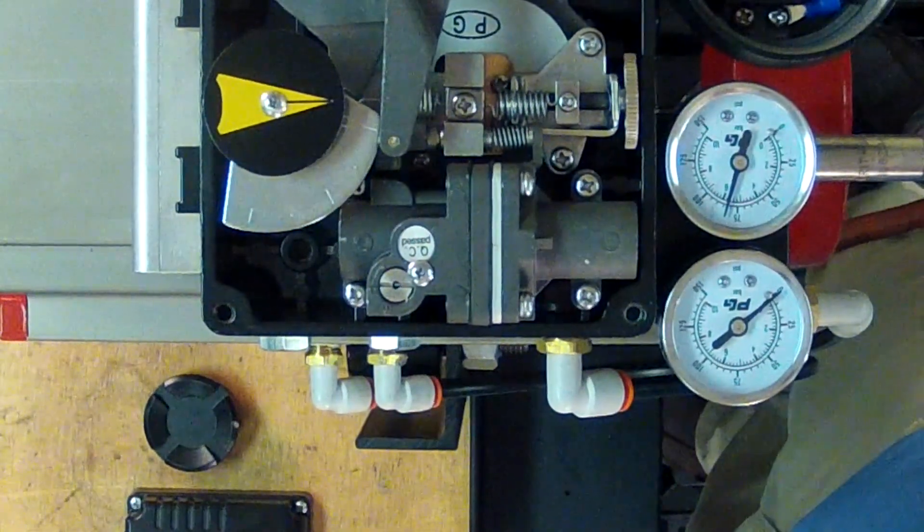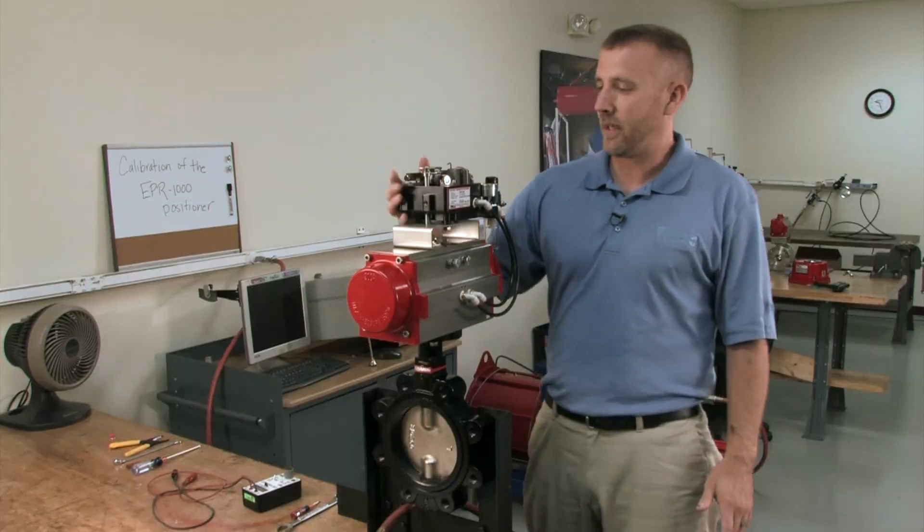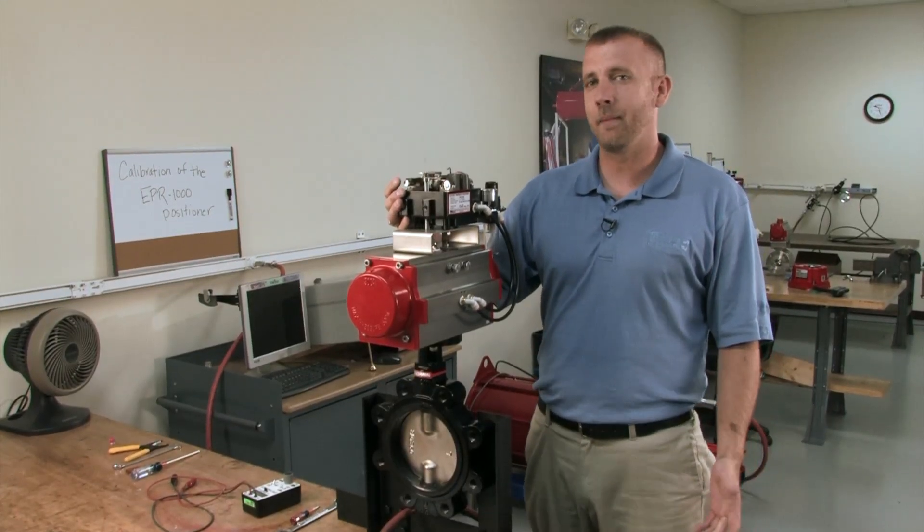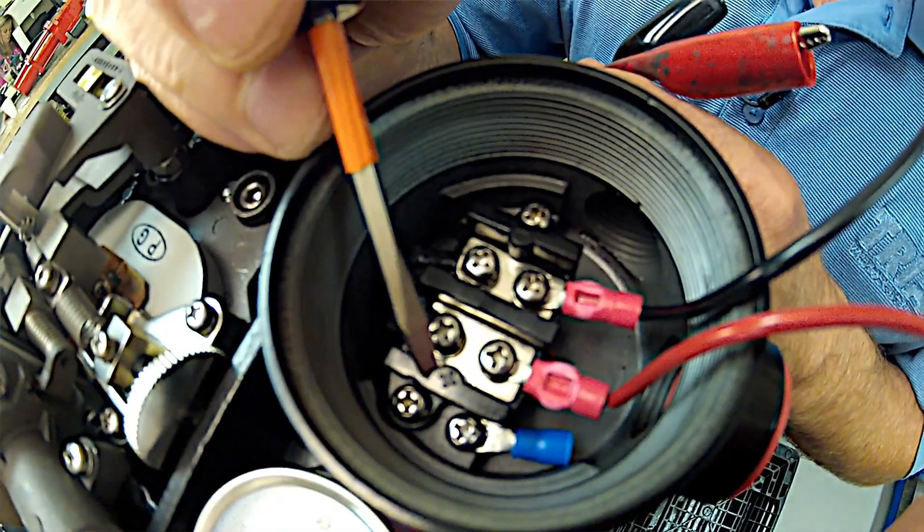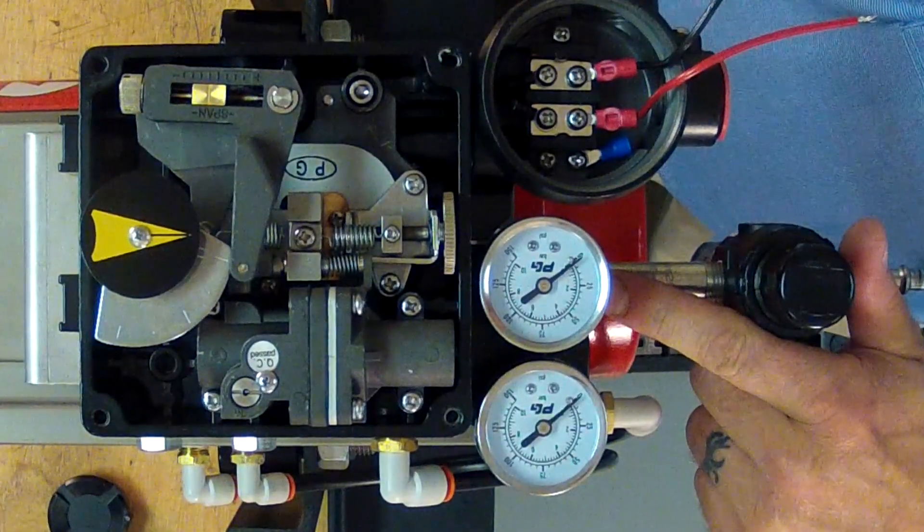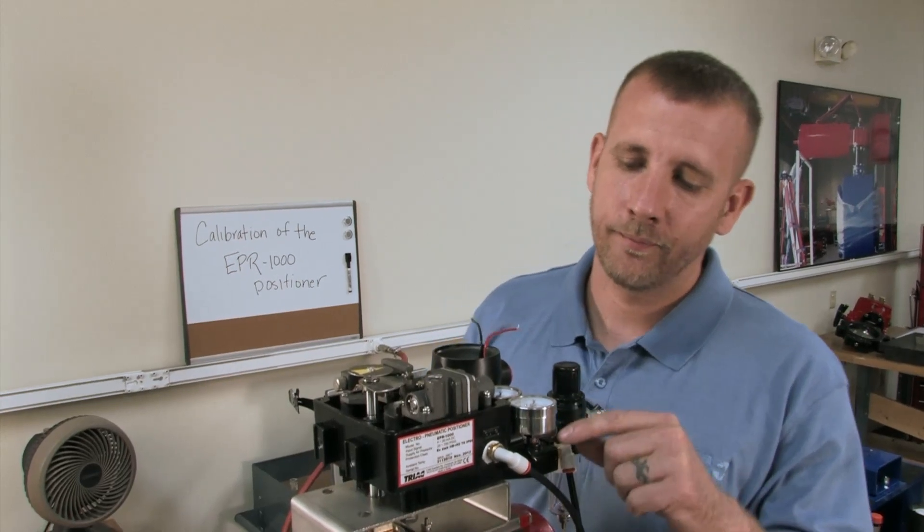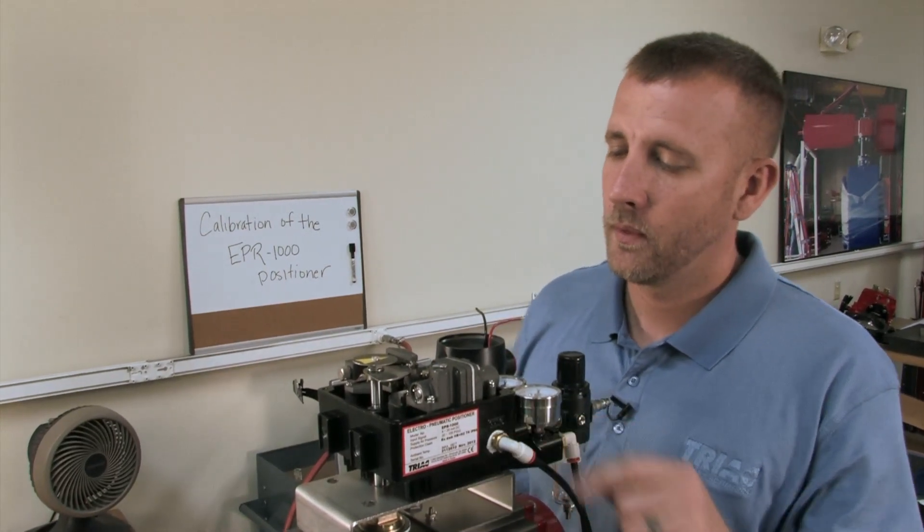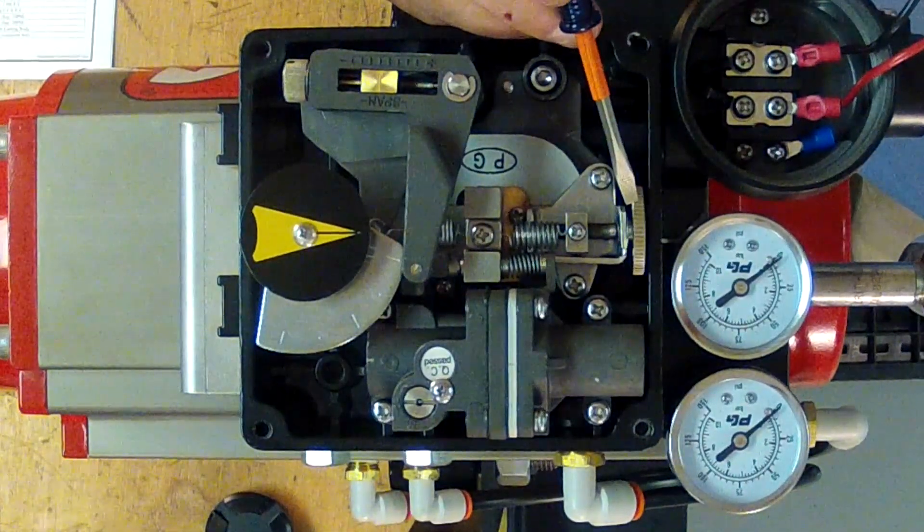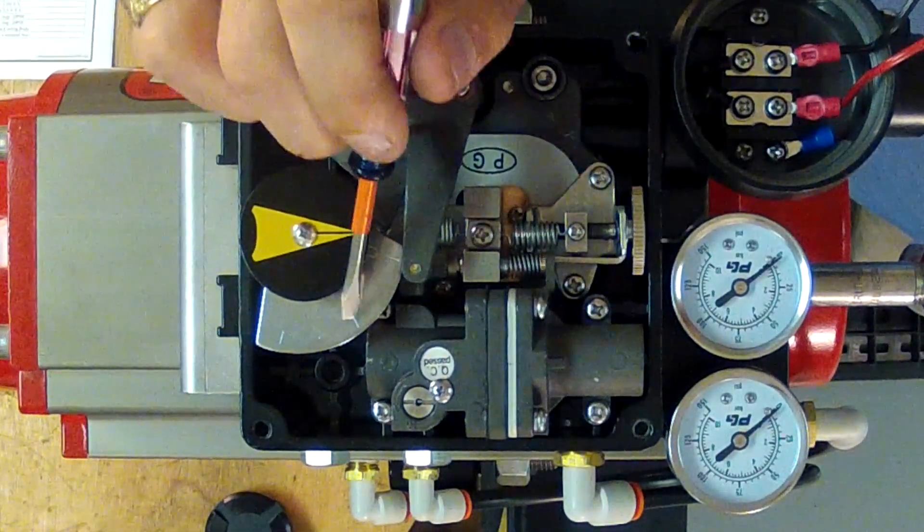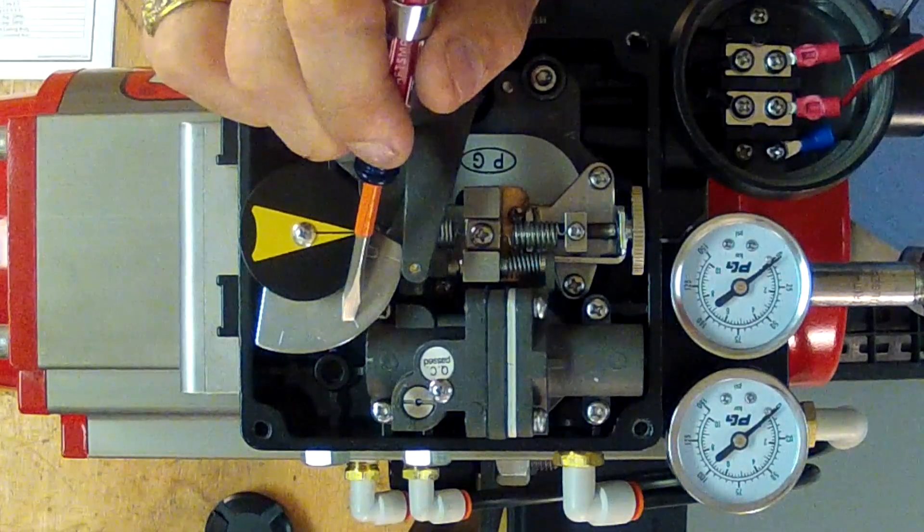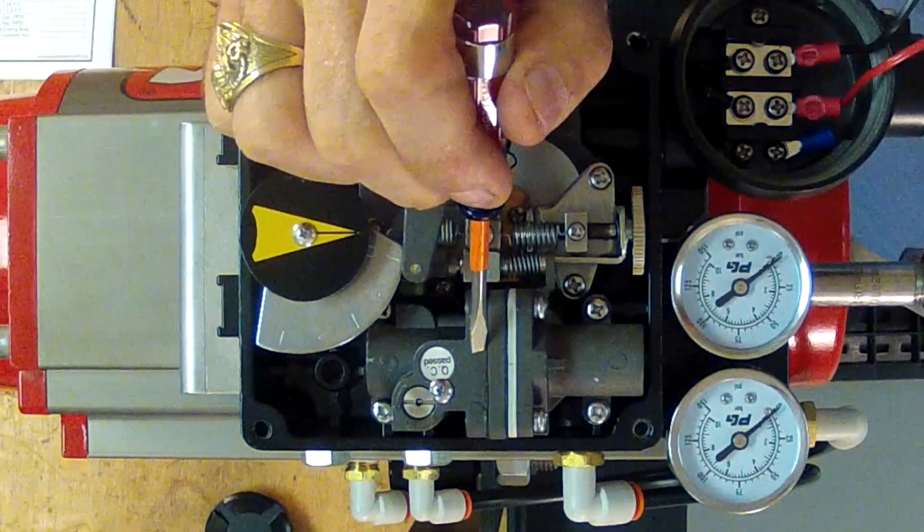Now, we're going to do the basic calibration of the positioner. This is our basic EPR-1000, four to 20 milliamp DC control voltage positioner. Your electrical connection, positive and negative, air supply connection, your out one, out two, zero adjustment screw, span adjustment screw, travel cam, and your pilot valve.